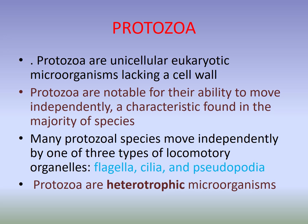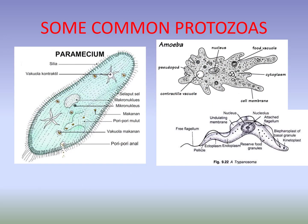The next group of microorganisms is protozoa. Protozoa are unicellular eukaryotic microorganisms lacking a cell wall. Protozoa are notable for their ability to move independently. Many protozoa species move by any of the three types of locomotory organelles, namely flagella, cilia, or pseudopodia. Protozoa also carry on heterotrophic nutrition because they are also achlorophyllous — they do not have chlorophyll.